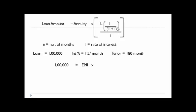So it is 0.01 to the power of 180 divided by 0.01. So here it is 1 divided by 1 plus 0.01, so it is 1.01 to the power of 180 divided by 0.01. This would give you some value. If you divide that by 1 lakh, it will give you the EMI, which is 1200.